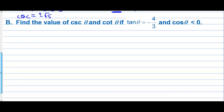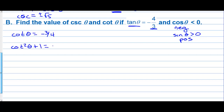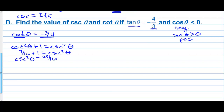Letter B. Find the value of cosecant theta and cotangent of theta if tangent is negative four-thirds and cosine is negative. If cosine is negative and tangent is negative, sine of theta must be positive. If tangent is negative four-thirds, then cotangent of theta equals negative three-fourths. Using cotangent squared theta plus one equals cosecant squared theta: nine-sixteenths plus one equals cosecant squared, giving twenty-five-sixteenths. So cosecant equals plus or minus five-fourths. Since sine is positive, cosecant is positive five-fourths.